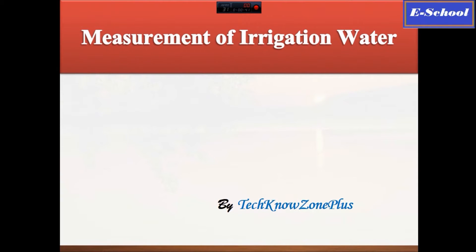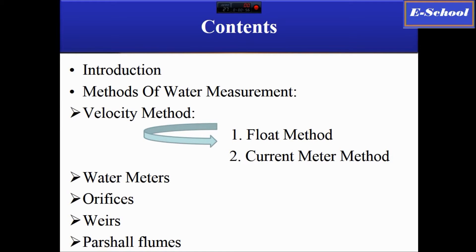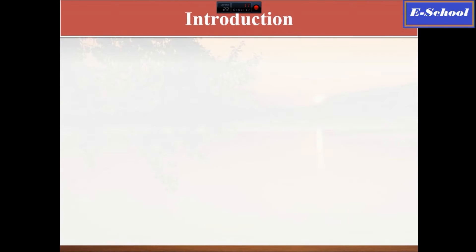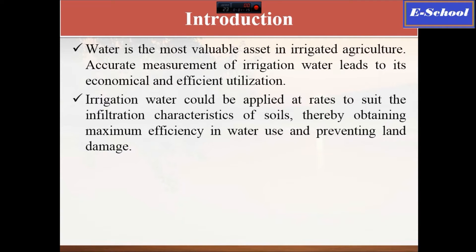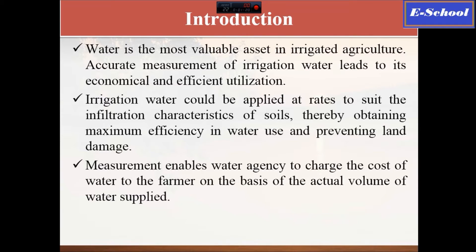Today's topic is the measurement of irrigation water, presented by Technozone Plus. We will briefly discuss methods of water measurement including the velocity method, flow meters, orifices, and so on. Everyone is aware that conservation of water is essential for the continuity of life on the planet, so we must find ways for the efficient utilization of the already scarce water resources and optimize water application, particularly in the agricultural field.